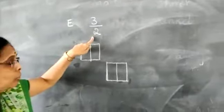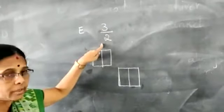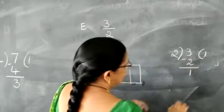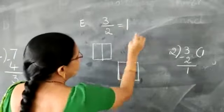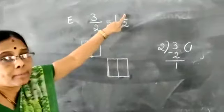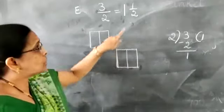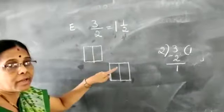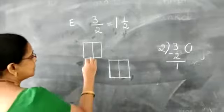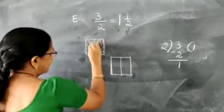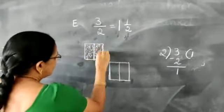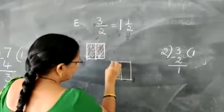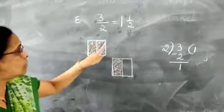Now part E: 3/2. Here also the numerator is greater than the denominator, so we have to divide. 2 goes into 3 once, remainder is 1. Answer is 1 whole and 1/2. Draw 2 boxes, divide each into 2 parts. The first box is fully shaded — that is 1 whole. The second box has 1 part shaded — that is 1/2.